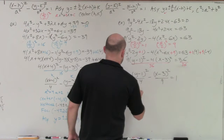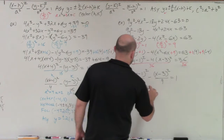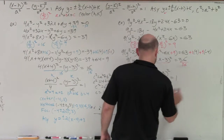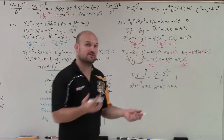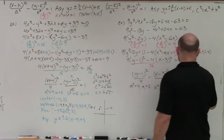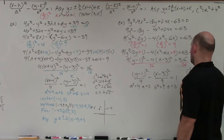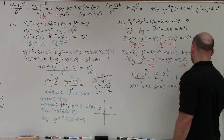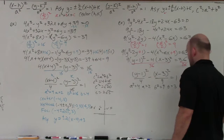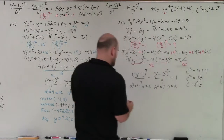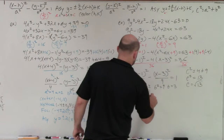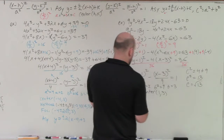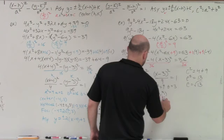I know that a² = 4, so a = 2, and b² = 9, so b = 3 — remember, it's always a² minus b². c² = 4 + 9, so c² = 13 and c = √13. The center is opposite of h and opposite of k, so that's (1, 3).